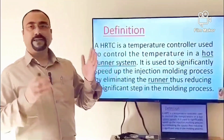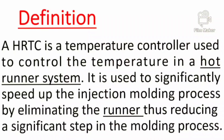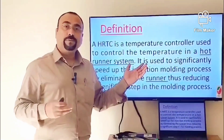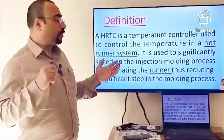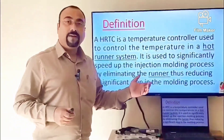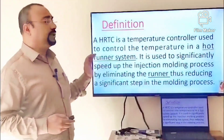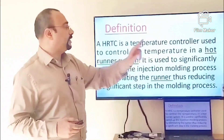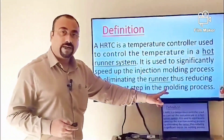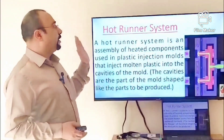Starting with the definition: HRTC is a temperature controller system which is used for the hot runner system. It is used to speed up the injection molding process by eliminating the runner from the whole cycle. In the definition, there are two topics I have underlined — the first one is the hot runner system, and the second one is runner.